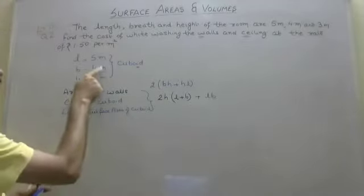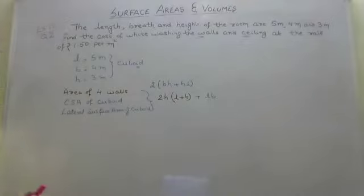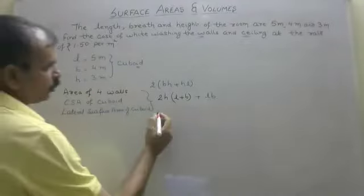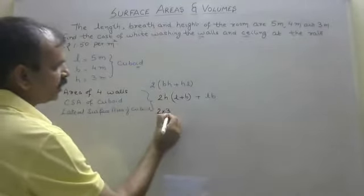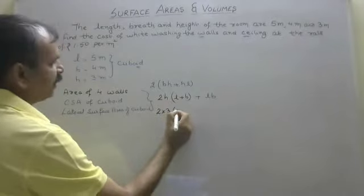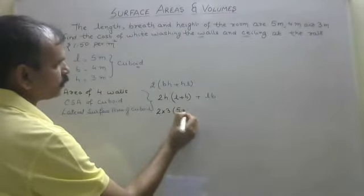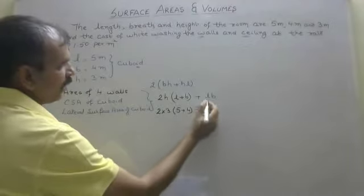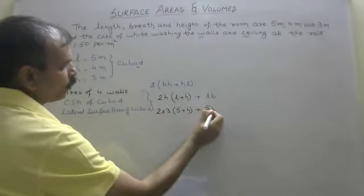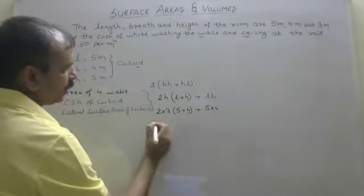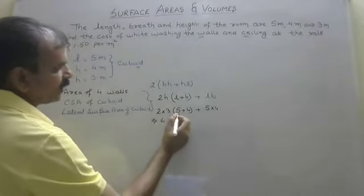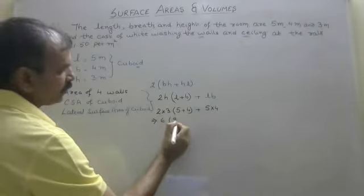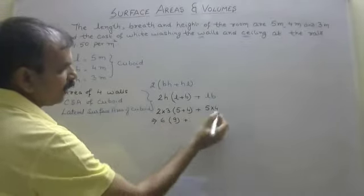First let's check — all values are in meters, that's good. So now: 2 into h is 3, l is 5 plus b is 4, plus l × b which is 5 into 4. Solving: 2 × 3 = 6, and inside the bracket 5 + 4 = 9, plus 5 × 4 = 20.